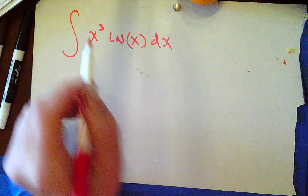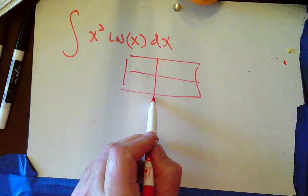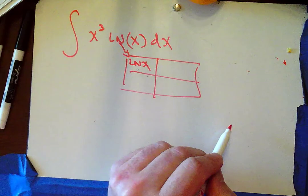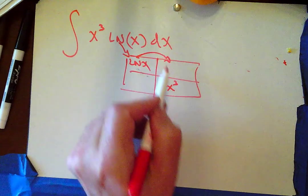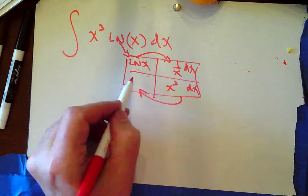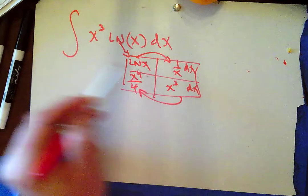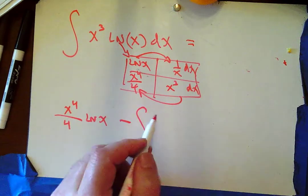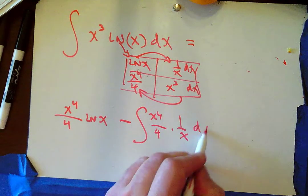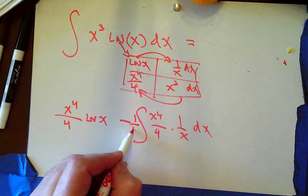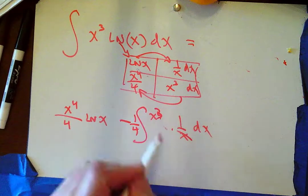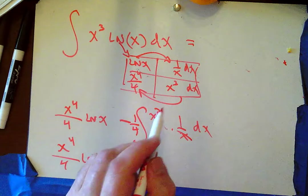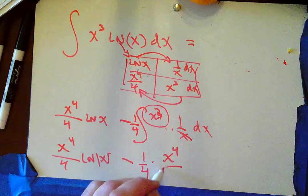Welcome back. By parts — not tabular. Why not tabular? Because I don't know the antiderivative of ln(x). I know the derivative of ln(x), which is 1/x, so I'm putting that in the derivative column. That means x cubed goes in the antiderivative column, giving x to the fourth over 4. So this equals x to the fourth over 4 times ln(x) minus the integral of x to the fourth over 4 times 1 over x dx.